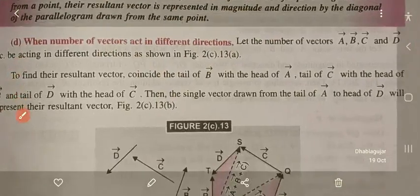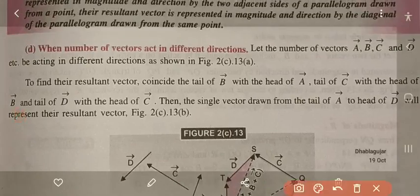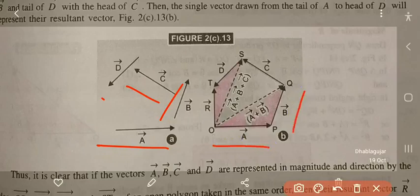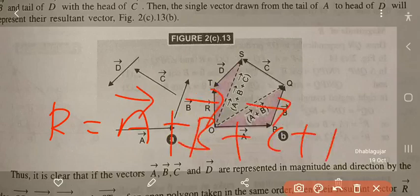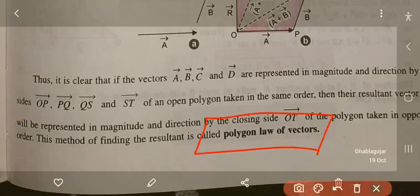When a number of vectors A, B, C, D are acting in different directions, to find the resultant: coincide the tail of B with the head of A, tail of C with the head of B, and so on. Using the triangle law, the resultant of A and B is A+B, then A+B+C, and finally R equals A plus B plus C plus D. This is the Polygon Law of Vectors, which states that if any number of vectors acting on a particle are represented in magnitude and direction by the sides of an open polygon in the same order, their resultant is represented by the closing side of the polygon taken in opposite order.